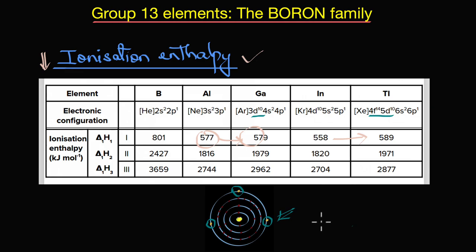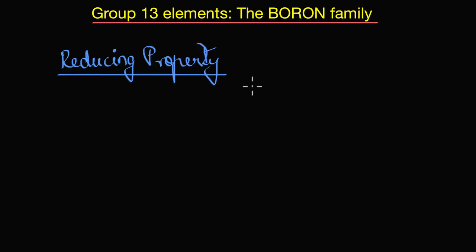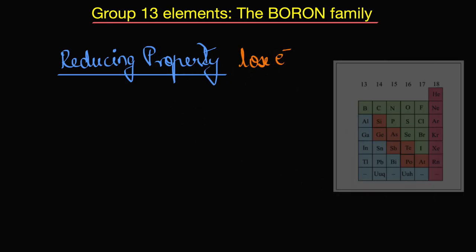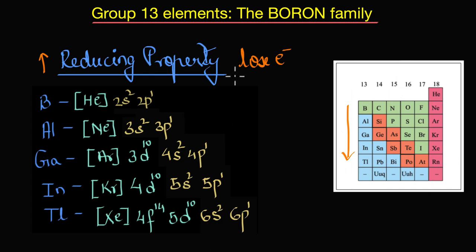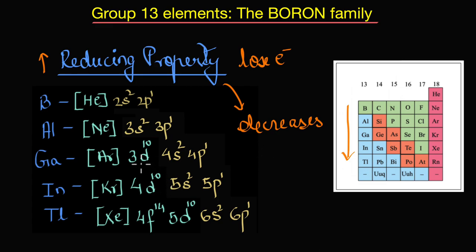Extending this trend, it becomes more difficult to lose electrons as we go down the group. This is exactly what happens with reducing property as well. In general, reducing property increases down the group, meaning it becomes easier to lose an electron. But in the case of group 13 elements, reducing property actually decreases.